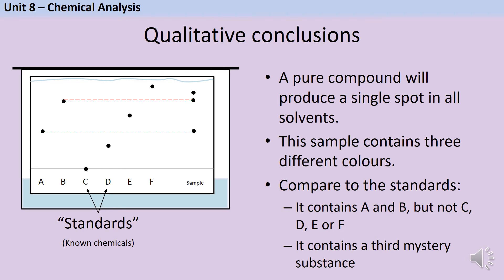And then there's a third dot and that doesn't correspond to any of my standards. So that is still a third mystery substance and I don't know what it is. But I can say conclusively that my sample doesn't contain C or D or E or F because I don't have a dot that corresponds to any of those.